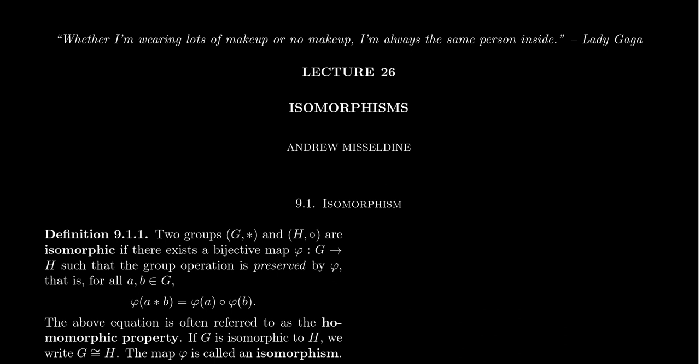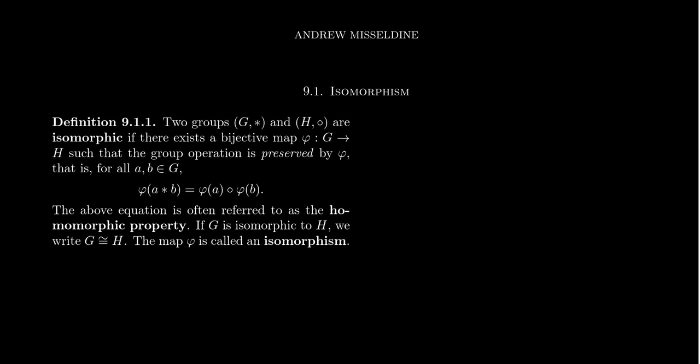So what exactly do we mean by an isomorphism? Imagine we have two groups in play: a group G and a group H. Now our usual way of expressing a group is just to describe it as a set. But that can be a bit misleading because a group is a set equipped with a binary operation. I want to emphasize not just the set, but the operation in play as well.